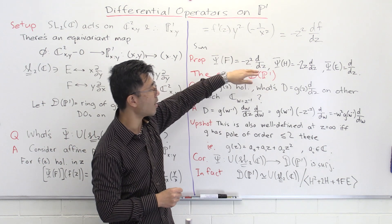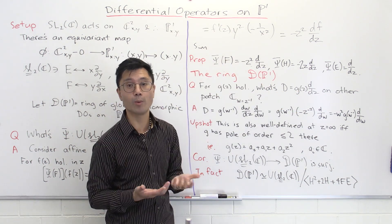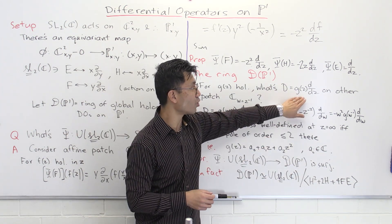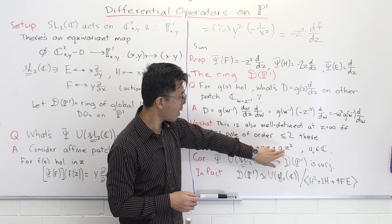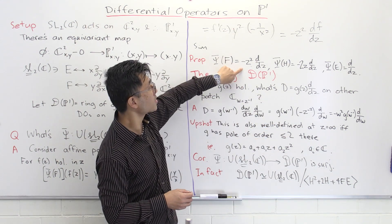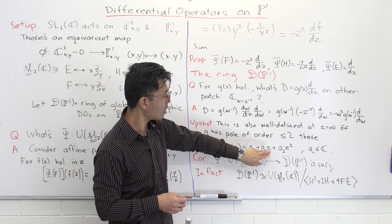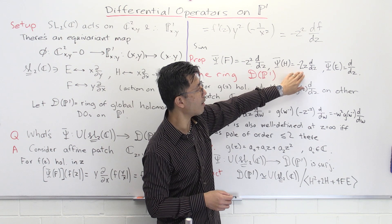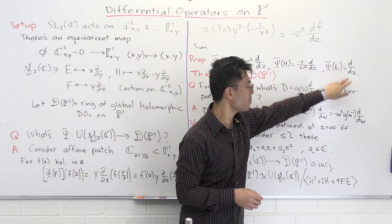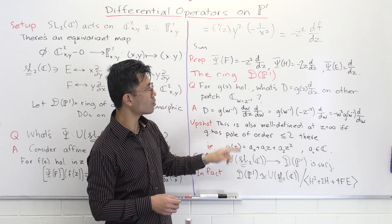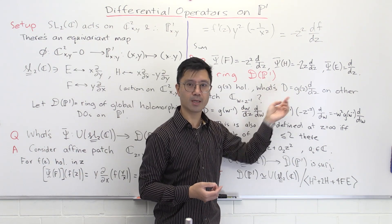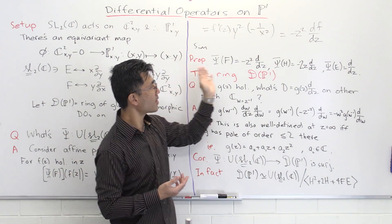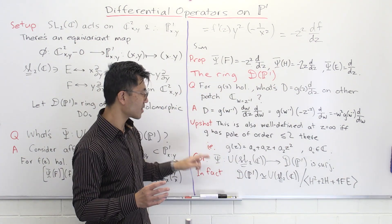These are the only possibilities for global first-order differential operators of this form. Interestingly, we've already seen all of these: choosing a₂ = −1 and the others zero gives psi(F); the linear term (a₁ ≠ 0) gives psi(H); and the constant term gives psi(E). So every global first-order differential operator on P1 is a linear combination of psi(E), psi(H), and psi(F). Considering products as well, it turns out the map psi is actually surjective from U(SL2C) to D(P1).